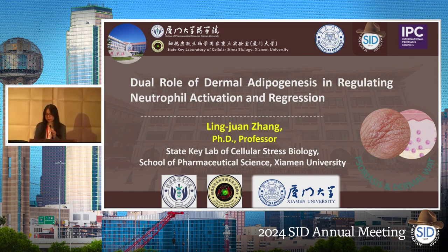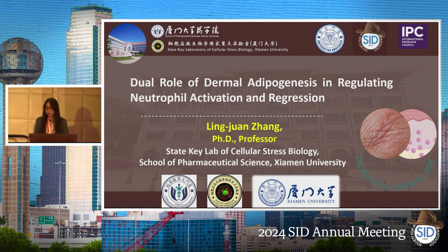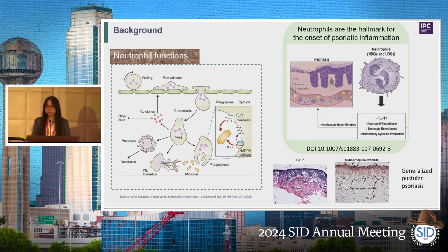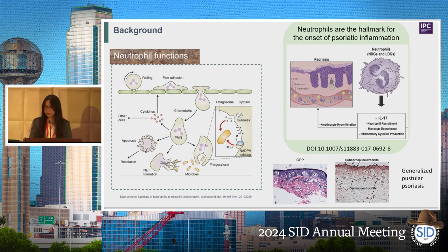It's such a great opportunity to be able to come from China to present our work about how we found that dermal adipogenesis plays a role in regulating neutrophil activation and regression. Neutrophils rapidly infiltrate the skin upon infection or danger signals, but excessive accumulation of neutrophils leads to activation of skin immunity. Neutrophil recruitment is considered a hallmark of the onset of psoriatic skin inflammation, and especially in generalized pustular psoriasis, excessive neutrophil accumulation in the dermis is considered a primary pathological mechanism.